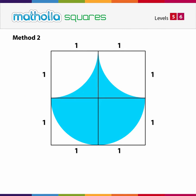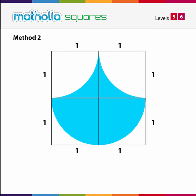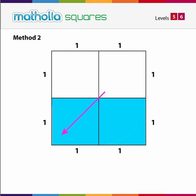Method 2: the shortcut method. Compare the blue figures in the top left square with the bottom right square. Do you notice any similarities? The blue part in the top left square is the same as the white part in the bottom right square. If we move this blue piece into the bottom right square, we can see that the parts will combine to give an area of 1 square unit. The same is true for the top right square and the bottom left square. So the area of the blue figure is 2 square units.